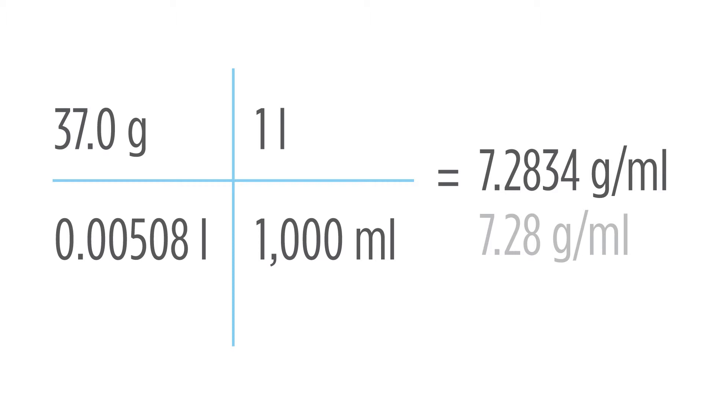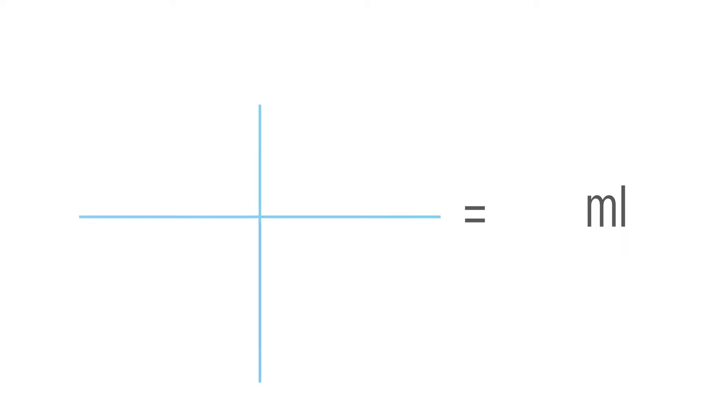That's one way to calculate this. We could have also converted liters into milliliters first. Let's take a quick look at that. We know that we're going to have to be using milliliters. So we can start with our liters and convert that into milliliters before we actually start the problem. So we take our value, liters, and convert that by using 1 liter is equal to 1,000 milliliters, and we'll end up with 5.08 milliliters.